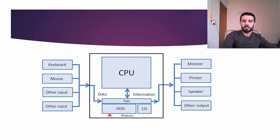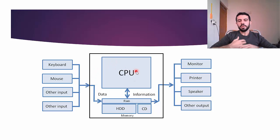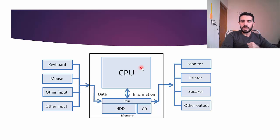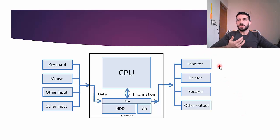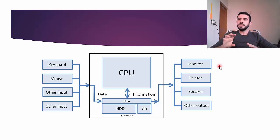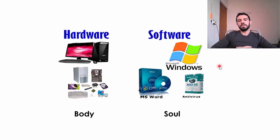Inside the computer, the processing involves many parts: CPU, hard drive, RAM, ROM, and so on. After processing the data, the result is sent to output devices like a monitor, printer, or speaker. We also have some general concepts: hardware and software.